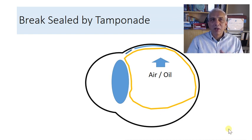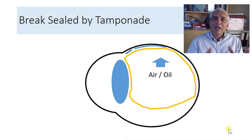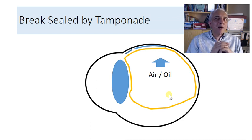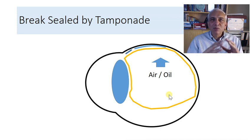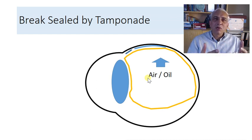So that is one way of dealing with the break: go in, do a vitrectomy, drain the SRF, seal the break, then use air or oil. Air and oil both go upward, gravity tends to make the SRF go down. Once the SRF is trapped behind the blocked break, it gets absorbed, and you need sufficient time for the break to form adhesions with the choroid so it becomes permanently sealed.